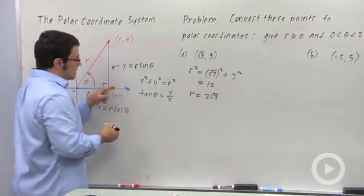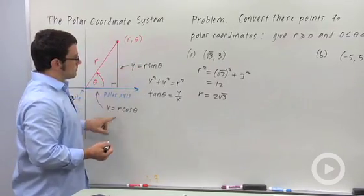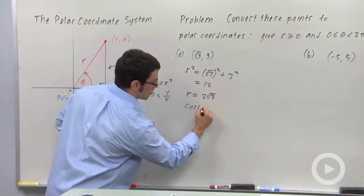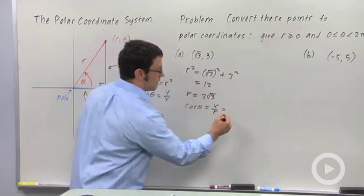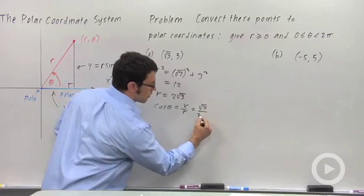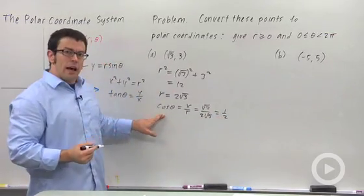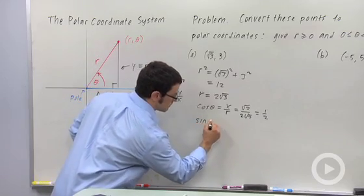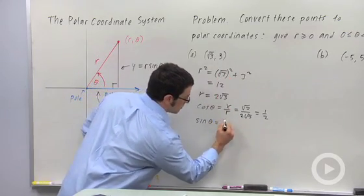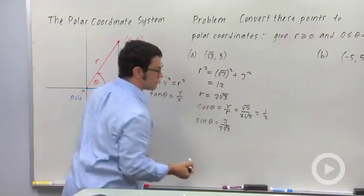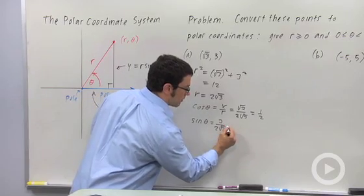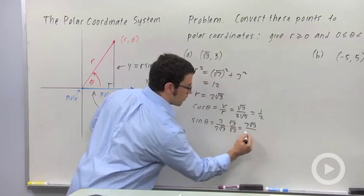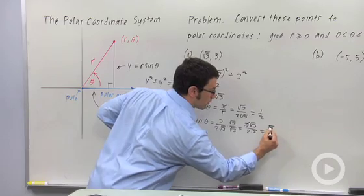And then we can use these formulas to find theta. You have x equals r cosine theta, and that means cosine theta equals x over r. Now x is √3, r is 2√3, and so that's 1/2. And I also use this formula, y equals r sine theta. So sine theta is y over r. The y value is 3, the r value is 2√3. And I can rationalize this denominator by multiplying by √3 over √3, and I get 3√3 over 2 times 3. The 3's cancel. √3 over 2.